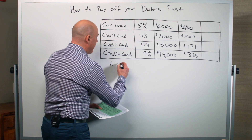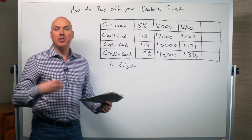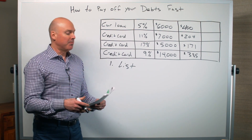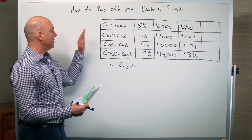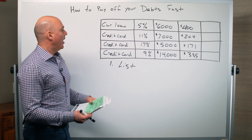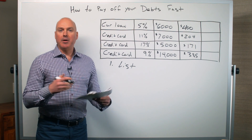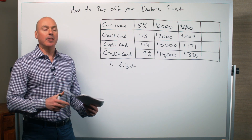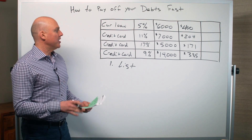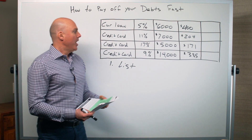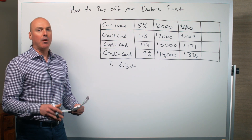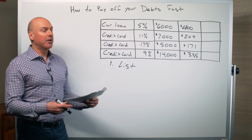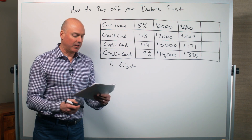Step number one is to make a list of all of the people and financial institutions that you owe money to. You can see I've already worked out a hypothetical example here. You want to list out primarily four key things: the financial institution or person you owe money to, the interest rate you're paying on that loan — you might have to log in to your online statement to find that — the current outstanding balance, and the minimum monthly payment. Just the minimum for now. For example, if your minimum payment is $204 but you're really paying $300, put the $204 down.